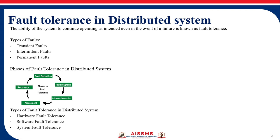What is a transient fault? These faults occur temporarily and disappear after a short period, and they are caused by environmental conditions. Once those conditions are removed, the system returns to its normal operation.